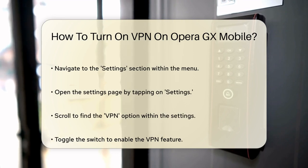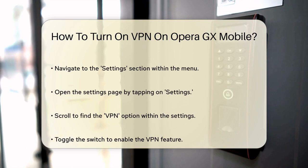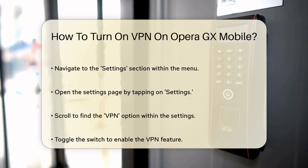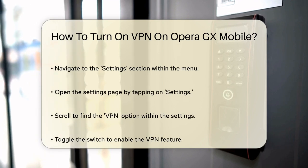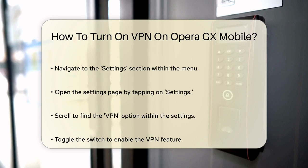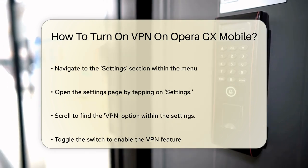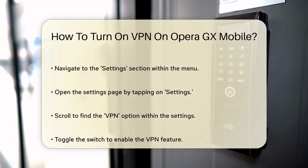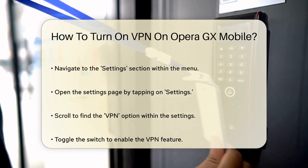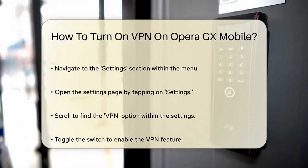Now, scroll through the Settings until you find the VPN option. It might take a few seconds to locate, but it's there. Once you've found the VPN option, simply toggle the switch to enable it. You'll notice a shield icon appear on your address bar, indicating that the VPN is now active.